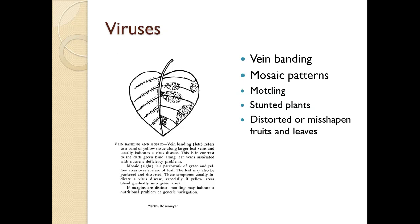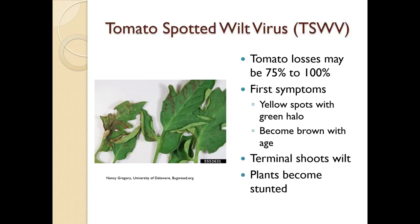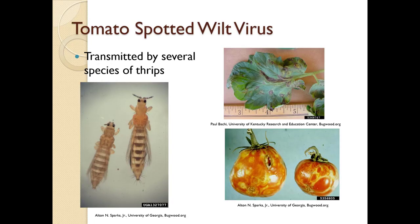Viruses can cause vein banding, mosaic patterns, mottling, stunted plants, and distorted or misshapen leaves or fruit. Here we have tomato spotted wilt virus, which can cause up to 100 percent plant loss. First symptoms are yellow spots with a green halo, which become brown with age; terminal shoots will wilt and plants become stunted. The virus is spread by several species of thrips — tiny insects that are often living in weeds around the garden — so weed control is very important.